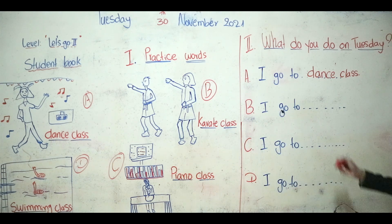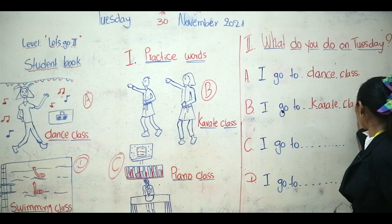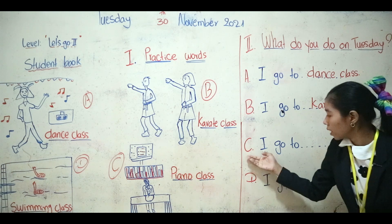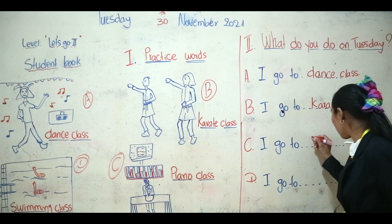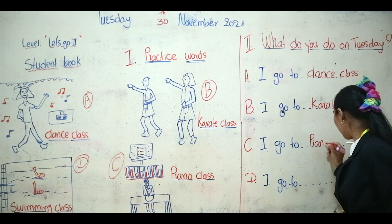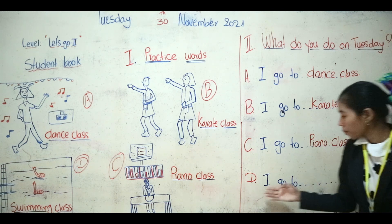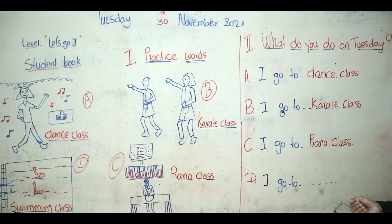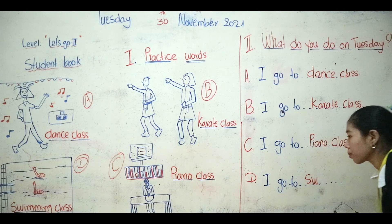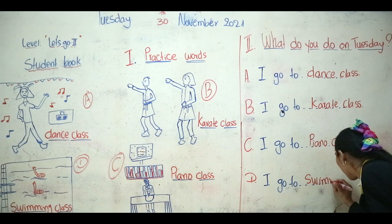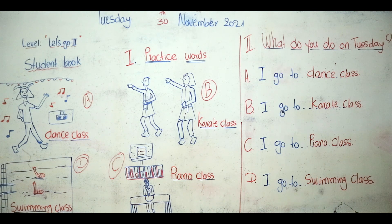Karate we spell K-A-R-A-T-E, class C-L-A-S-S — great job! For picture C, she goes to piano class. Piano we spell P-I-A-N-O, and class C-L-A-S-S — piano class. For the last one, picture D — I go to swimming class. Swimming: S-W-I-M-M-I-N-G, and class C-L-A-S-S — swimming class!